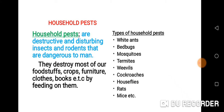Household pests are destructive and disturbing insects and rodents that are dangerous to man. These household pests are commonly found in our homes. They destroy most of our foodstuffs, crops, furniture, clothes, books, etc., by feeding on them.